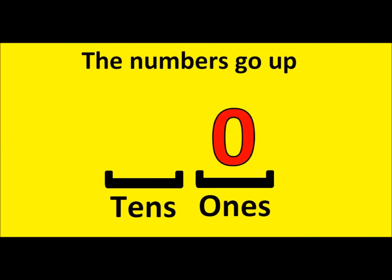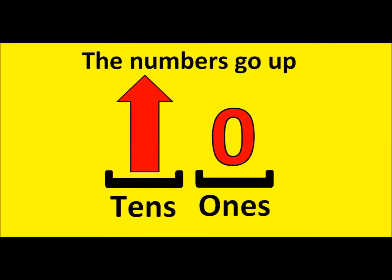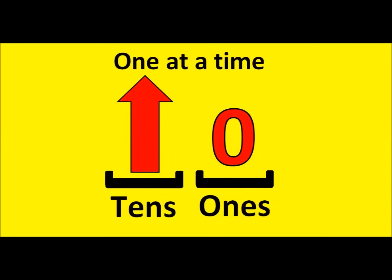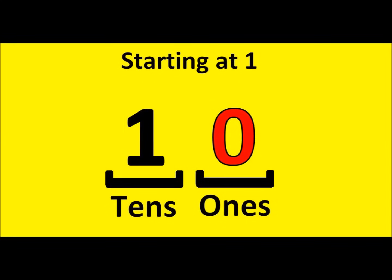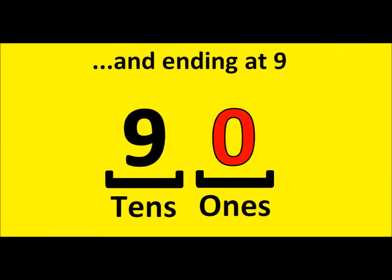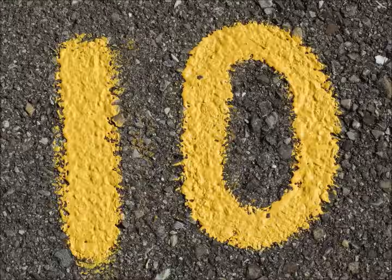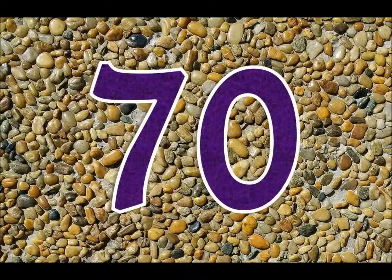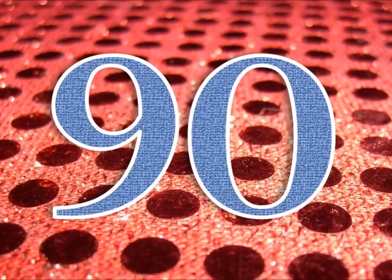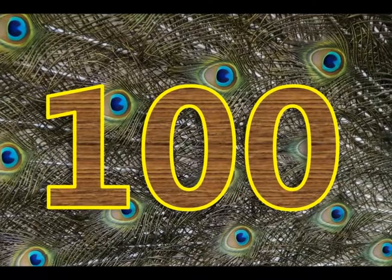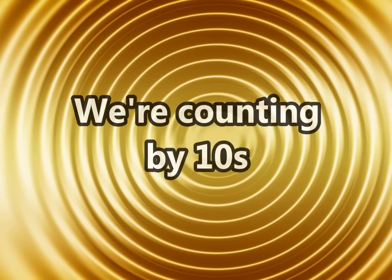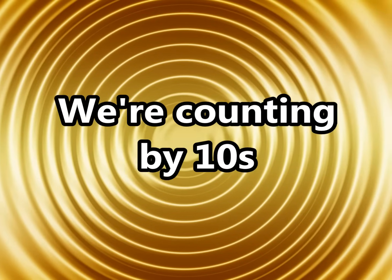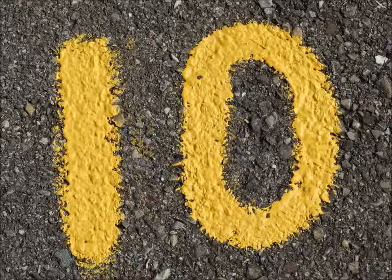The numbers go up one at a time, starting at one and ending at nine. Let's count: 10, 20, 30, 40, 50, 60, 70, 80, 90, 100. We're counting by tens.